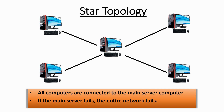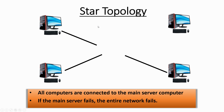If one particular cable goes wrong, that computer goes out of the network, but the rest of the network is still communicating. That's the advantage of star topology over bus topology, where the entire network failed if the main cable failed. The disadvantage is that if the main server machine fails, then the entire network will fail.